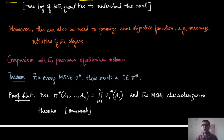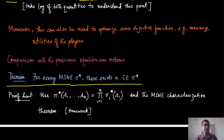The natural thing when introducing a new concept is to relate it to previous equilibrium notions. In this case, that is the mixed strategy Nash equilibrium. This theorem essentially says that for every mixed strategy Nash equilibrium sigma star, there exists a correlated equilibrium. So in all games where a mixed strategy Nash equilibrium exists, a correlated equilibrium also exists. You can construct pi star using sigma star, and the construction is intuitive.